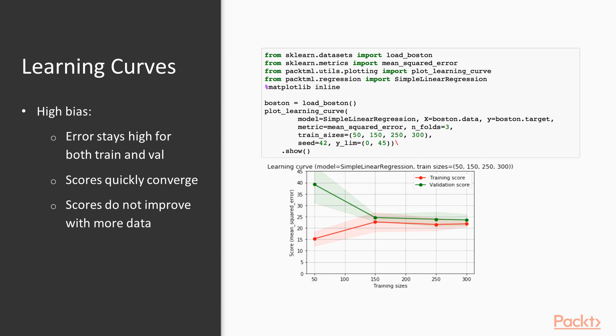It displays symptoms of high bias. Notice that our error is very similar for the train and validation sets — it got there very rapidly, but it's still relatively high. Additionally, the scores converge so quickly and they don't improve as our training set grows at all, and those are all symptoms of high bias.